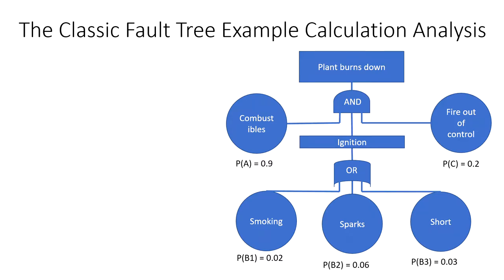This is the classic example for fault tree analysis. To cause a fire, you need combustible material, ignition sources, and oxygen to keep the fire going. Ignition might come from someone smoking, a spark from metalwork, or a short circuit — either of these will cause ignition.